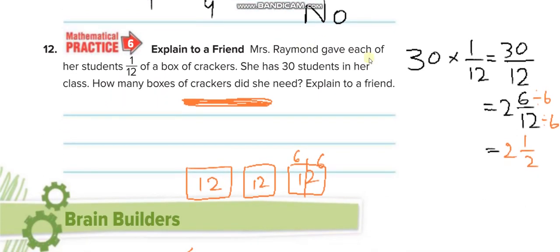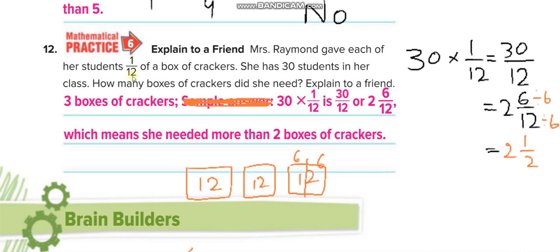Mr. Raymond gave each of her students one-twelfth of a box of crackers. She has 30 students, so she needs how many boxes of crackers? You multiply 30 by 1 over 12. 30 over 12, and then we can take out 2 twelves out of 30. We will simplify it, divide by 6 up and divide by 6 down, so it will be 2 whole and 1 over 2. So she needs two and a half boxes of crackers.